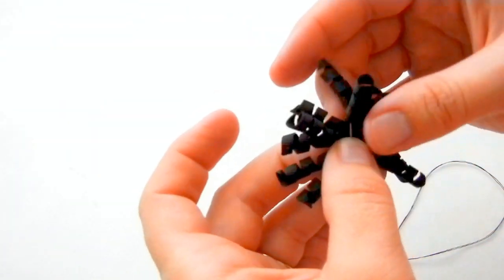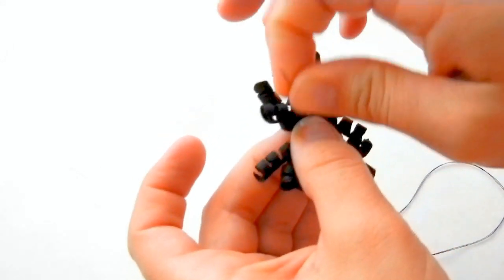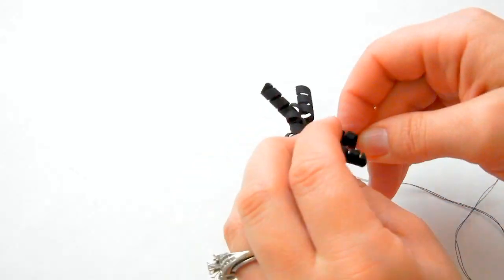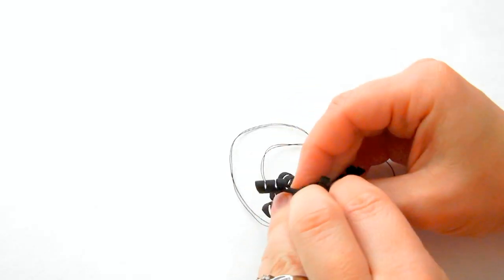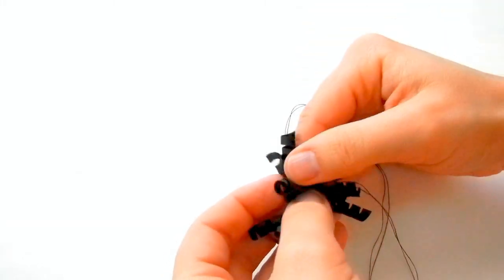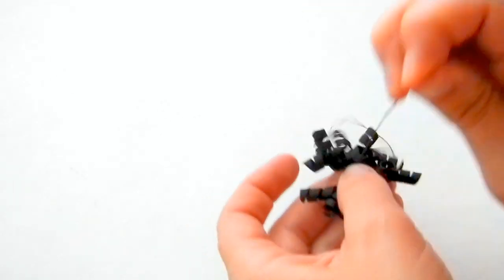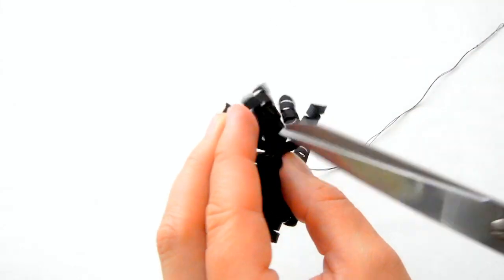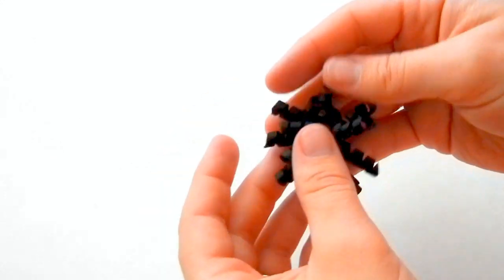Once we've got them all on there, kind of squish them together and then pull the needle through and then bring it back. Make sure not to pull too hard because we don't want the knot to go through. Then we're just going to go back and forth a few times just to secure the bow. And that gives you the spider body.